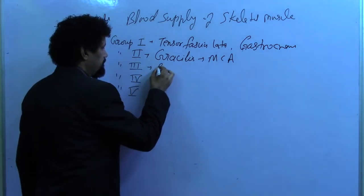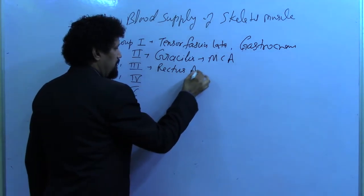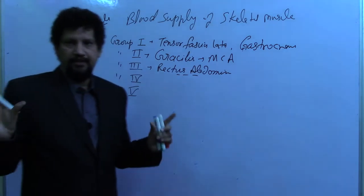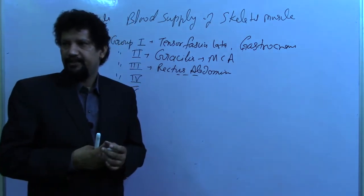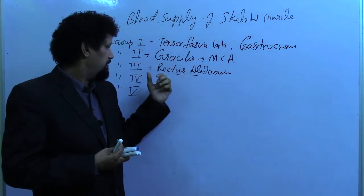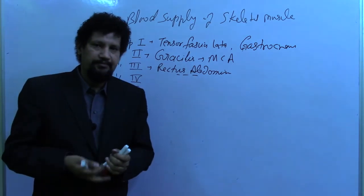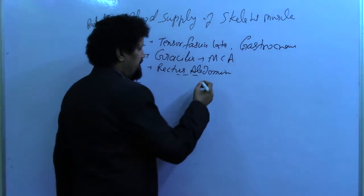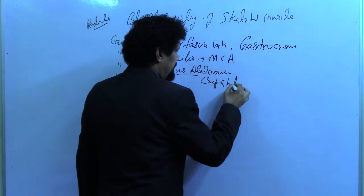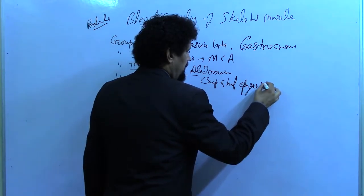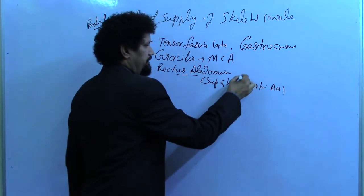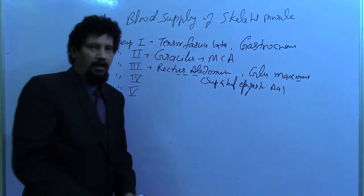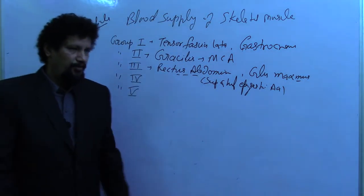An example of group 3 is the rectus abdominis. Some muscles are supplied by two dominant arterial pedicles — this type includes the rectus abdominis, which is supplied by the superior and inferior epigastric arteries, and the gluteus maximus, which is supplied by the superior and inferior gluteal arteries.